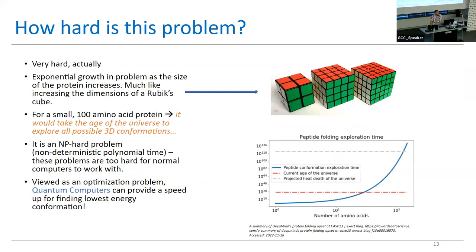How hard is this problem? It is extremely hard. If you try to do this using a physics-based approach, most programs tap out at around 30 amino acids. Think of a Rubik's cube — if you keep increasing the dimensions, the problem gets harder and harder and the number of possible solutions increases dramatically. For a small 100 amino acid protein, it would take approximately the age of the entire universe to sample all 3D conformations. This is an NP-hard optimization problem, and it turns out that by way of superposition and entanglement, quantum computers are supposed to be better at handling these problems.